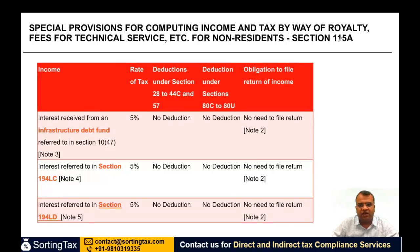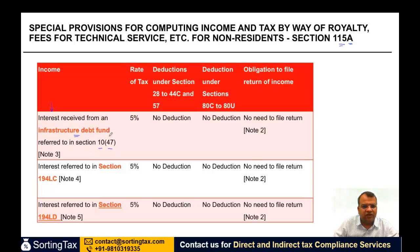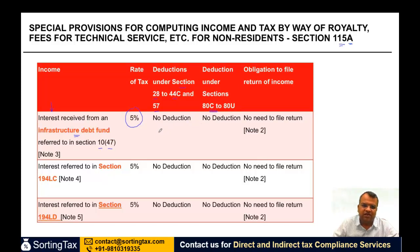Let's look at some more income covered under Section 115. Interest received from an infrastructure debt fund referred to in Section 10(47) — if a non-resident receives any interest income from such a fund, the rate of withholding tax is 5%. The non-resident will not get any deductions under Section 28 to 44 or Section 57.